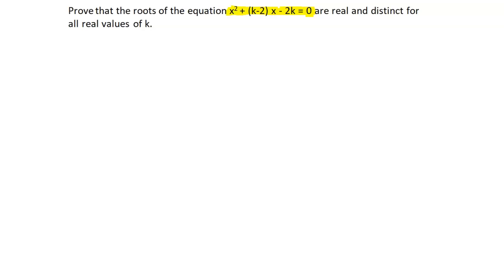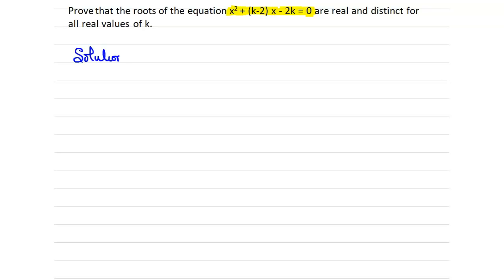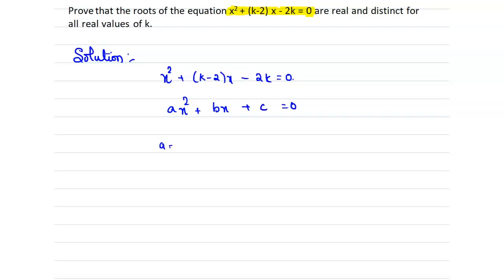Now we have to find the nature of the roots. We are given the quadratic equation x² + (k - 2)x - 2k = 0. Comparing with the general form ax² + bx + c = 0, by comparing the coefficients of x² we get a = 1.